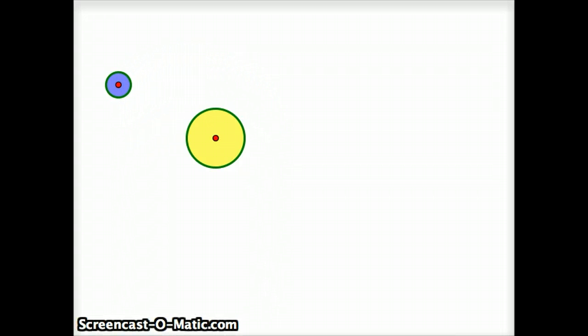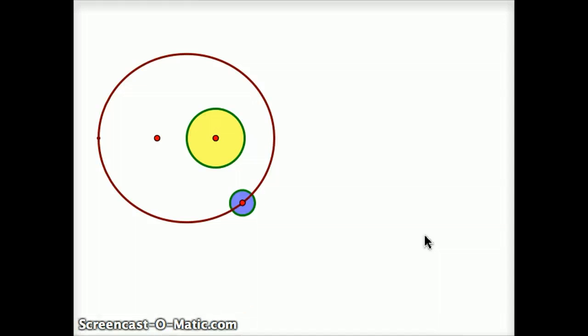But instead, it appears like it's going around in an ellipse. So that was one of Kepler's three laws, that the planet actually goes around the sun in an ellipse, where the sun is at one of the two foci of the ellipse. Now, I'm going to talk a little bit about ellipses in a bit, but an ellipse has two focus points.